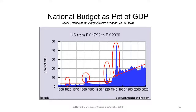Here is the national budget as a percent of gross domestic product. Up until the New Deal era in the 1930s, budgets stayed relatively flat as a percentage of GDP. The spikes circled in red correspond to wars — the War of 1812, the Civil War, World War I, and World War II. But what we also see post-World War II, really post-New Deal, is a general growth in the national budget itself as a percentage of GDP.